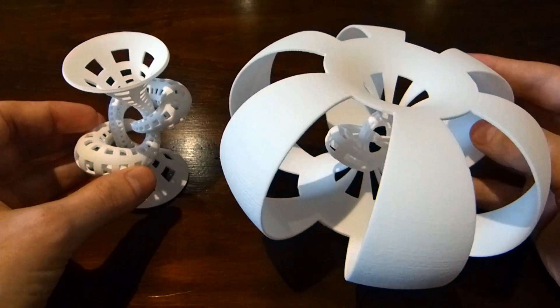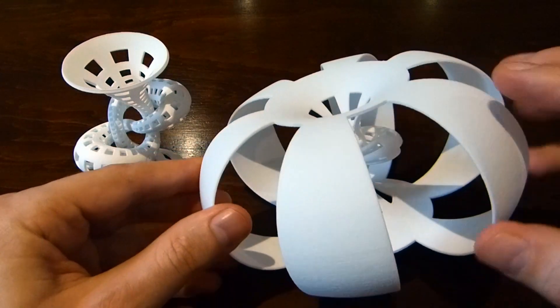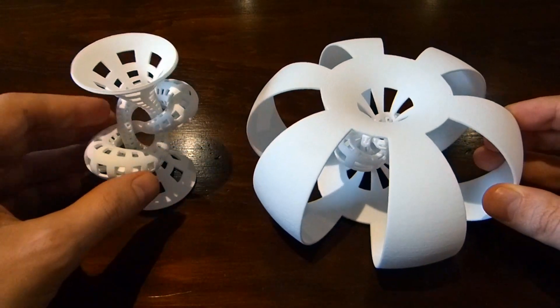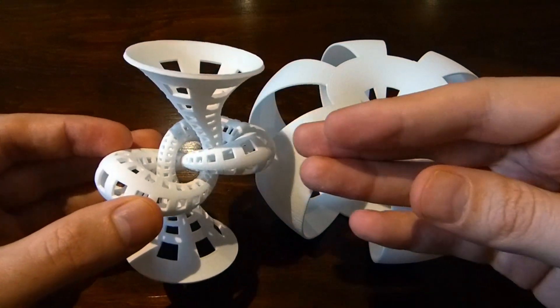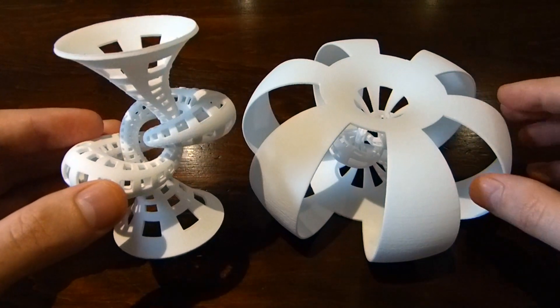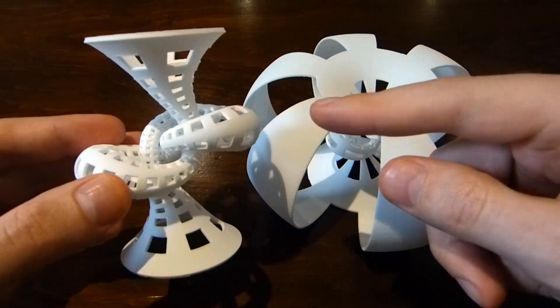Again, for the figure eight knot complement we needed to have these rectangular windows so you could see inside. But since we don't have an outside to see inside of in the trumpet version, you don't need these windows; we have square windows again.